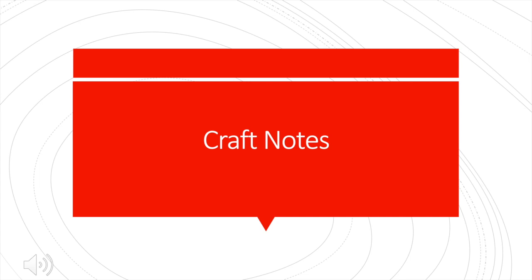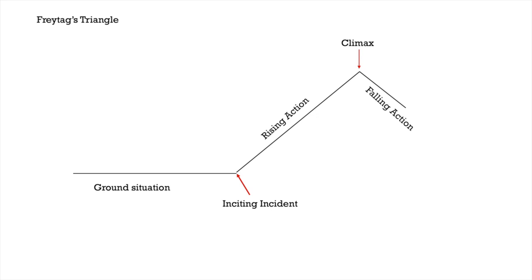Today we're going to be talking about structure, specifically three-act story structure using a diagram called Freytag's Triangle. You may have seen this shape before. Some people call it the story triangle or the dramatic arc, but its technical name is Freytag's Triangle, named after the 19th century German novelist Gustav Freytag.